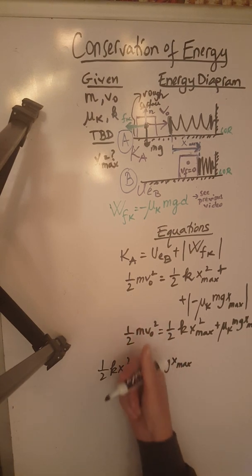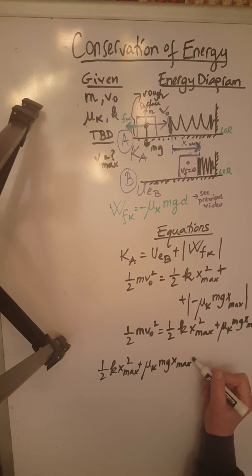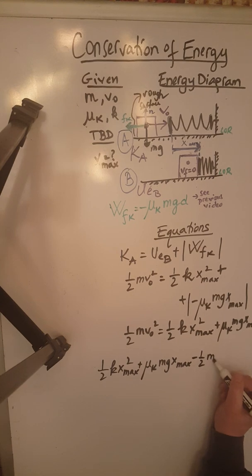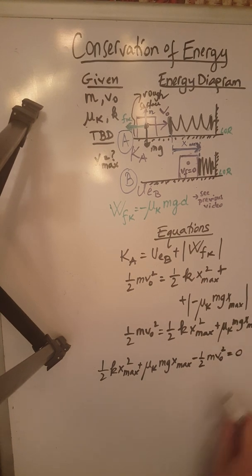And the third one will be this one, moved to the other side becomes negative 1 half M V 0 squared and that's equal to zero.